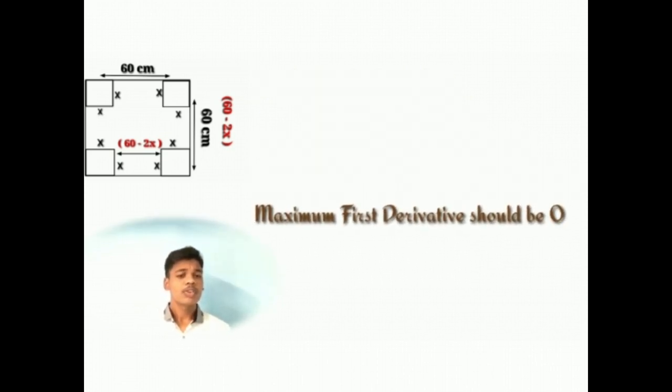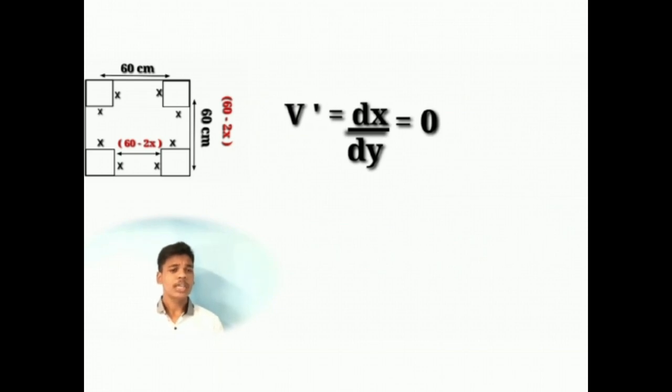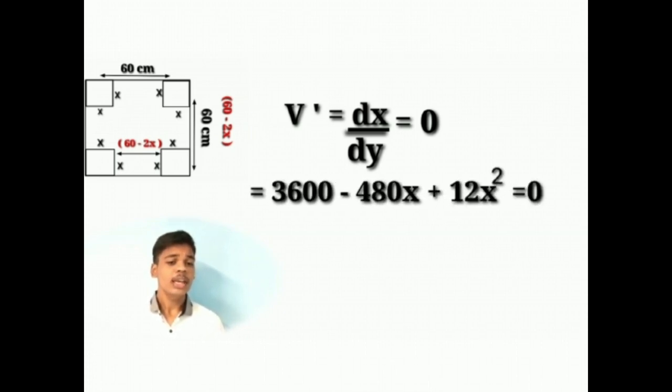To get the maximum, first derivative should be dV/dx is equal to 0. Taking first derivative of 3600 minus 480x plus 12x squared is equal to 0.